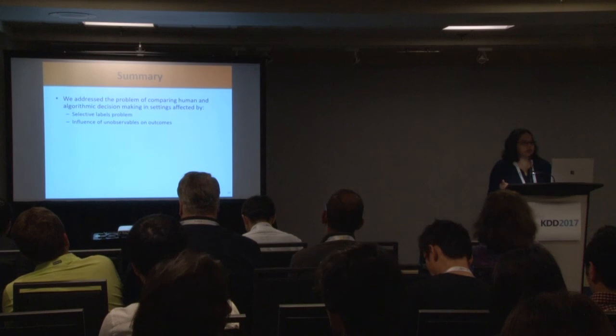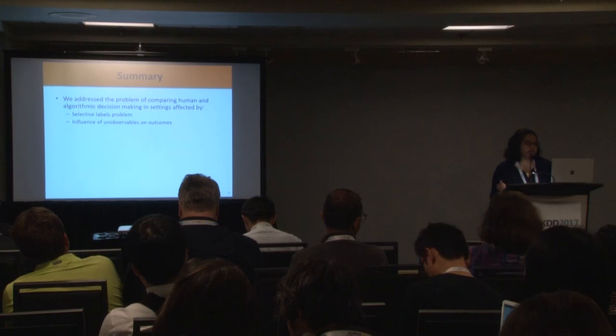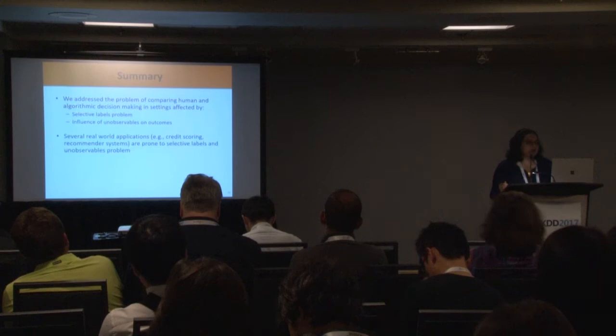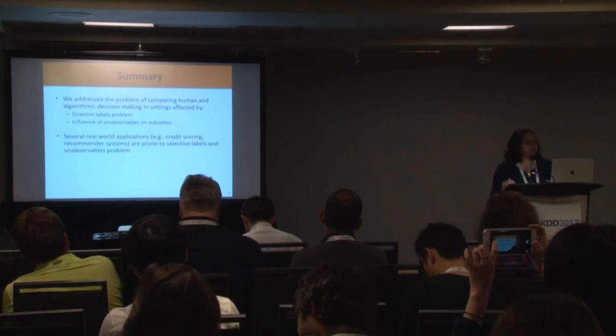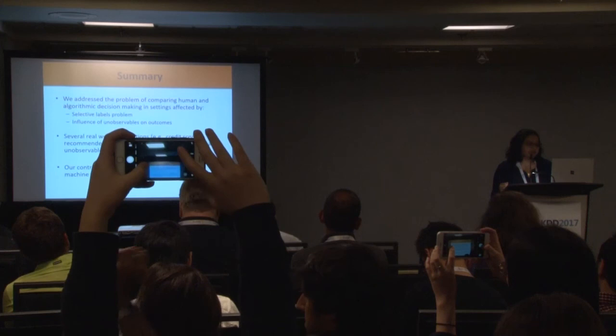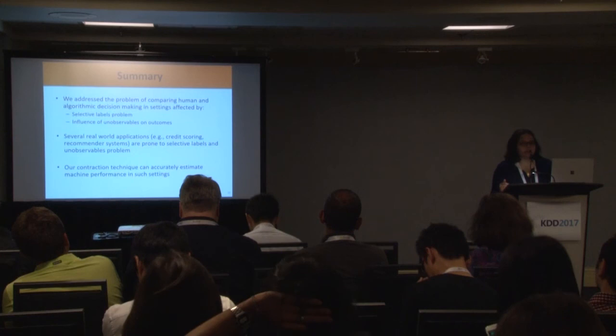In summary, this work addresses comparing human and algorithmic decision making in the presence of selective labels and the influence of unobservables on outcomes. Many other applications — credit scoring, recommender systems, and more — are prone to both these problems. Our contraction technique, demonstrated both empirically and with worst case error bounds, can accurately estimate machine performance in such settings. Thank you.